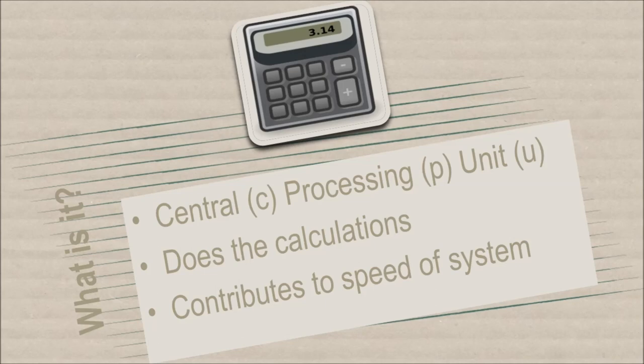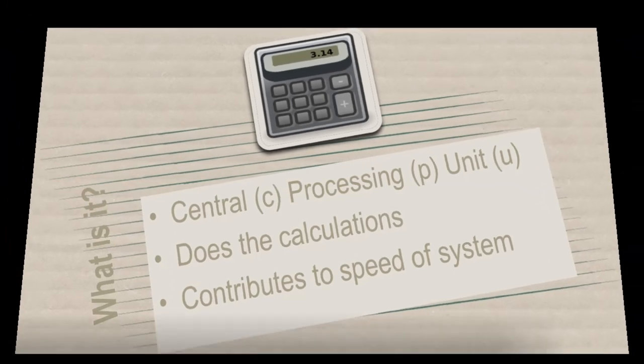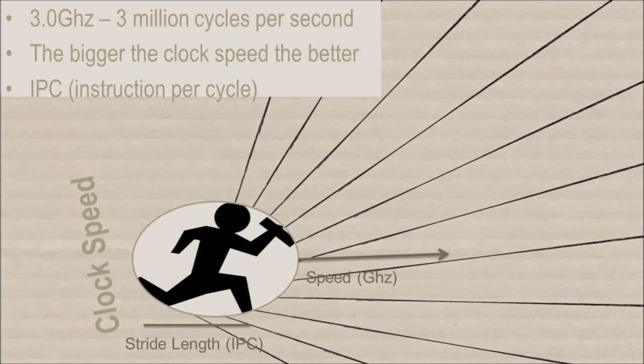The speed, or clock frequency, refers to how many cycles the processor goes through in a second. A 3 GHz processor does 3 million cycles per second. Obviously, the more cycles, the faster the unit.